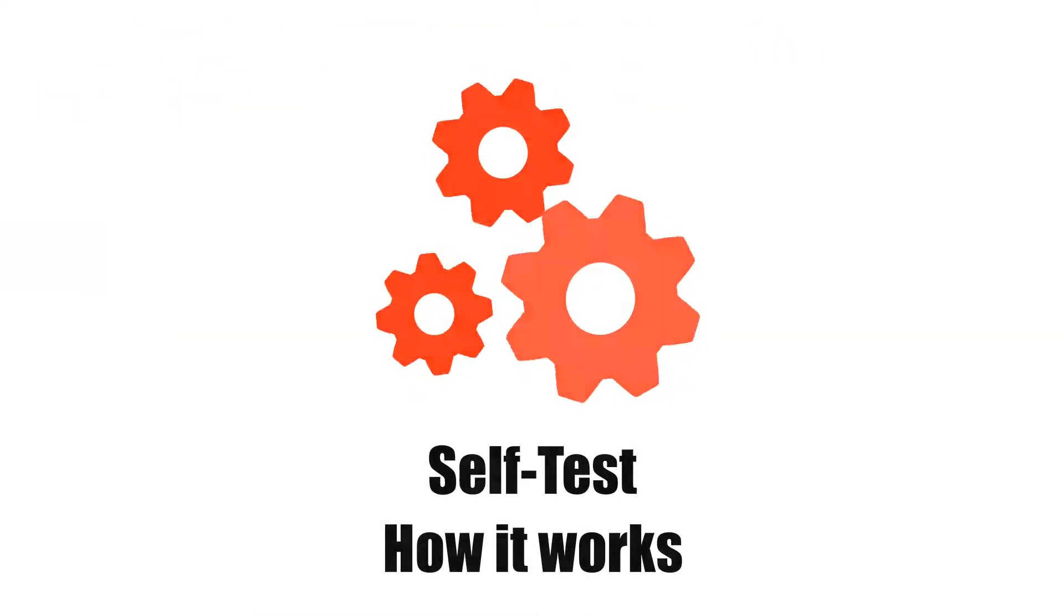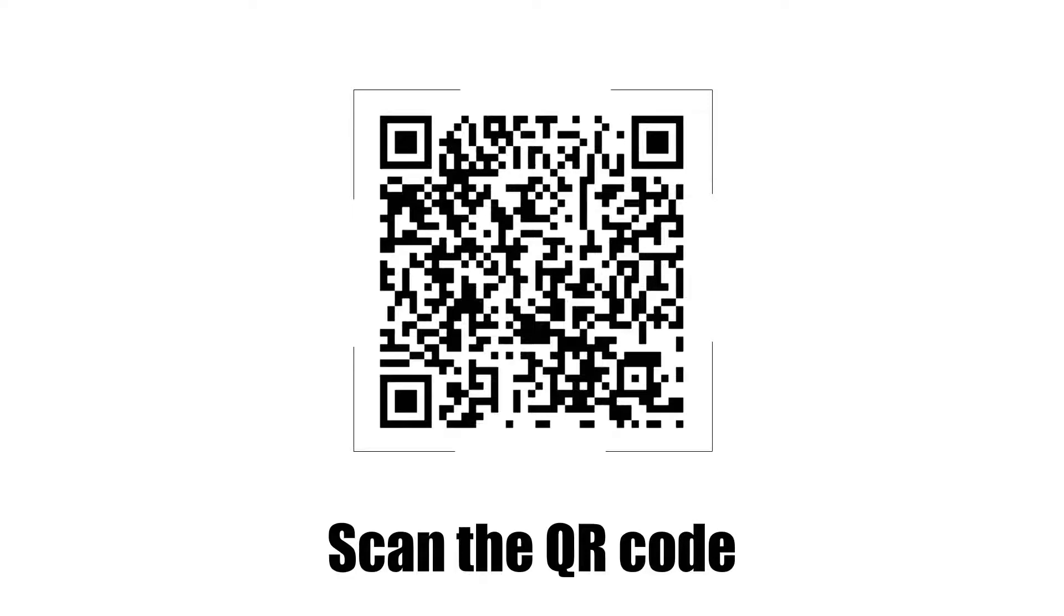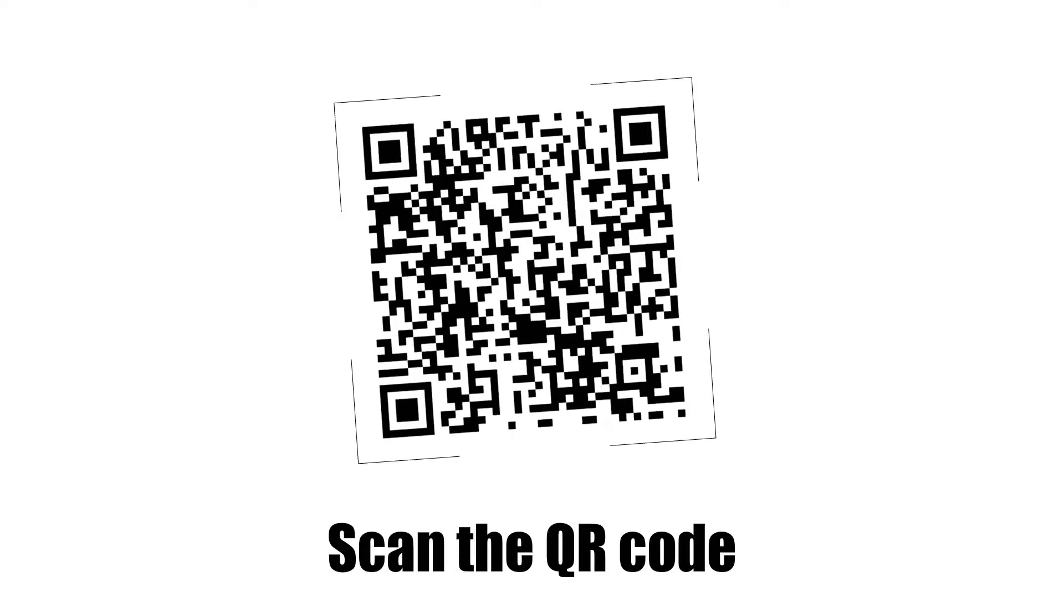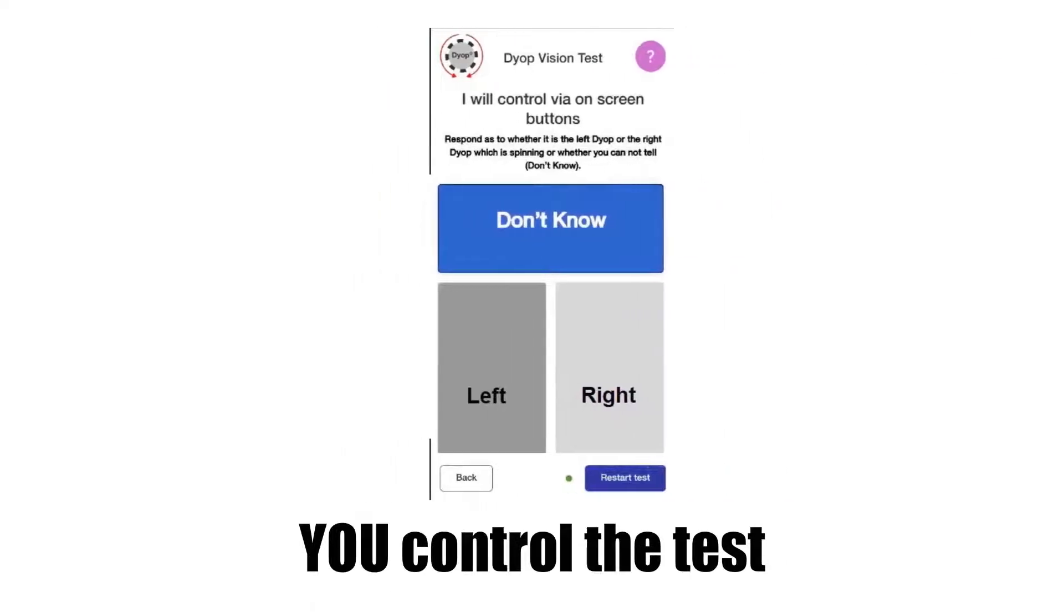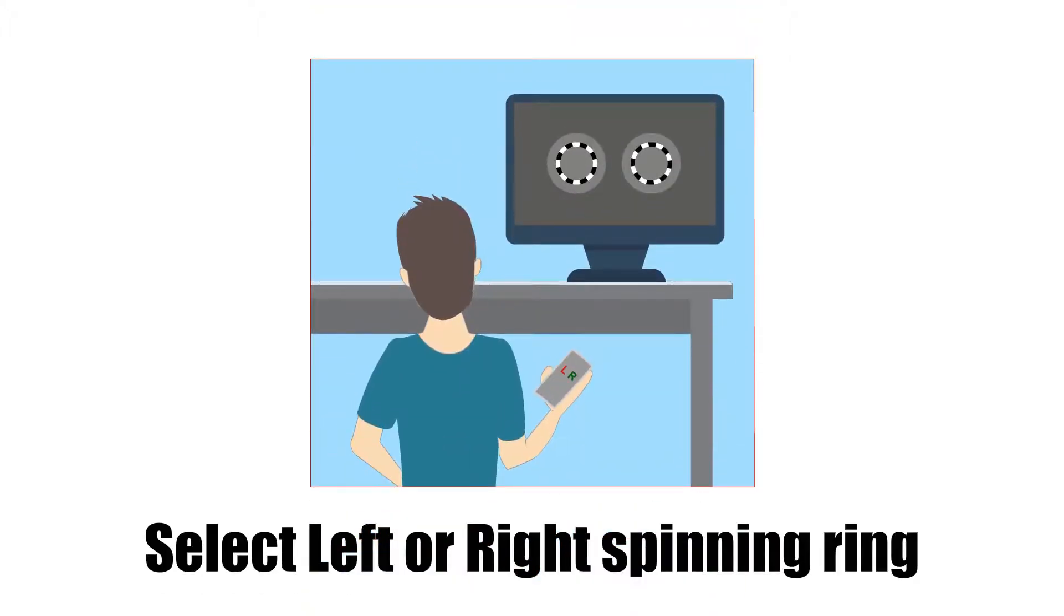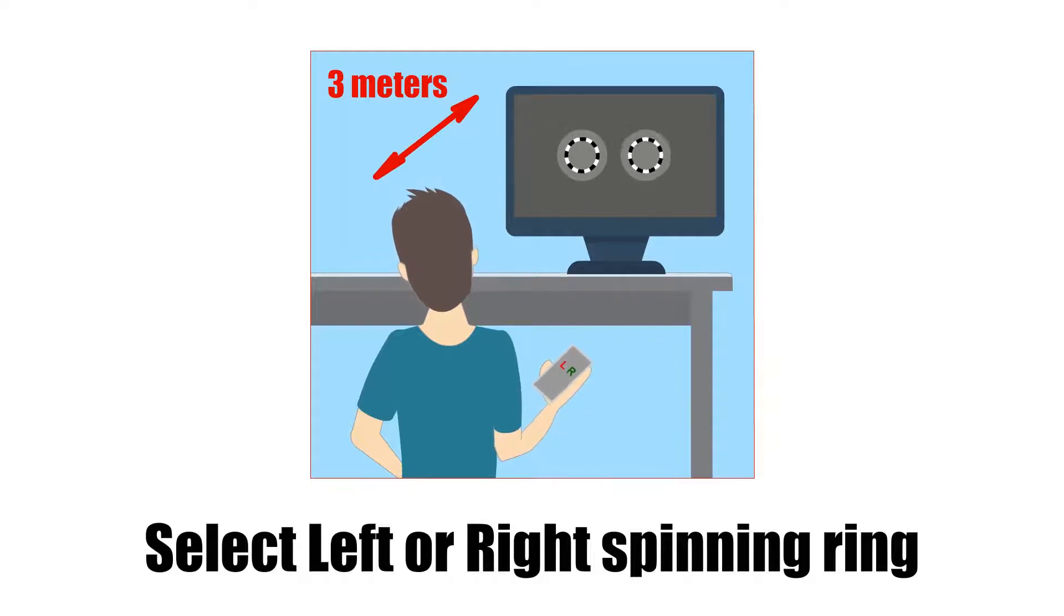Here's how the self-test works. After registration, you scan the QR code shown on your screen with your smartphone. Your phone now becomes the test controller and the answering device for the test. Your mobile device is used to answer whether the left or right Diop is spinning with an option if you are unsure.